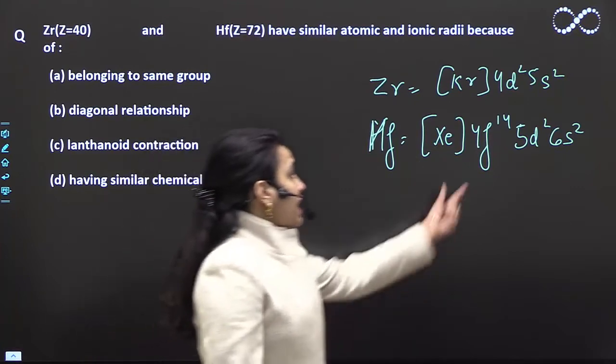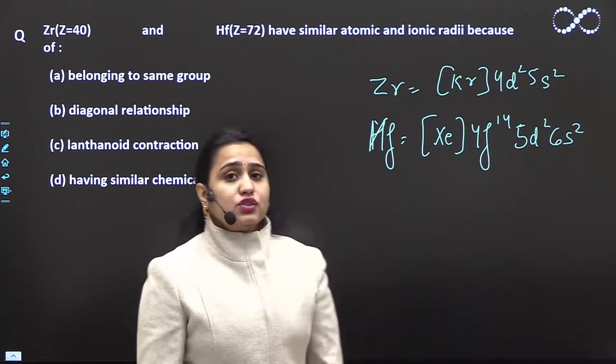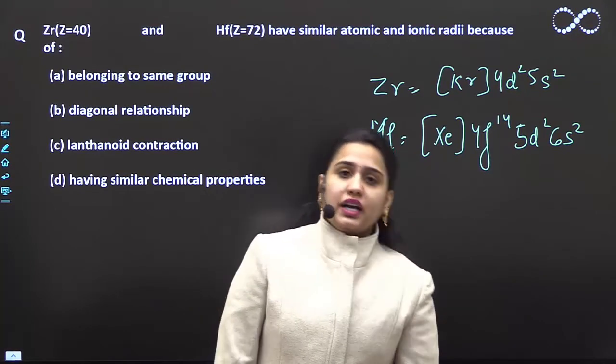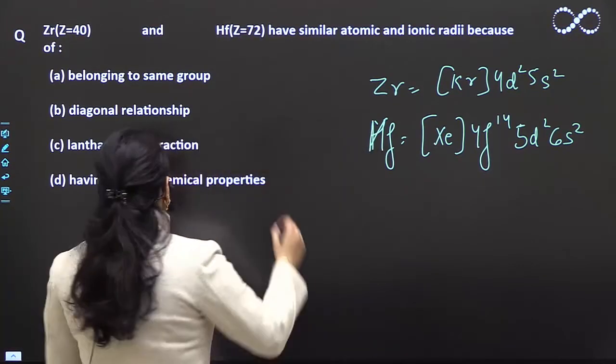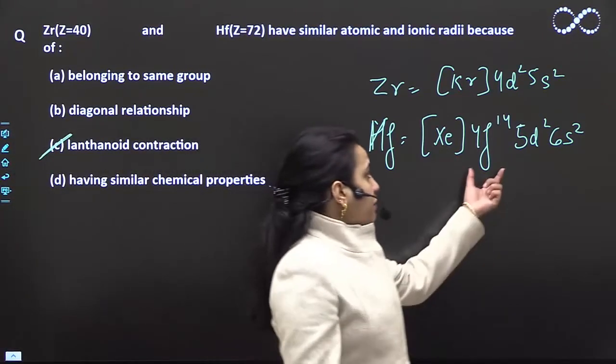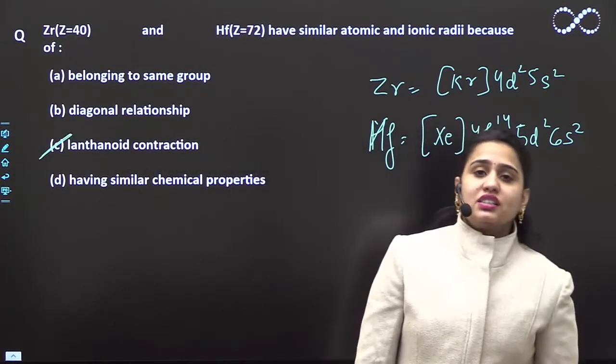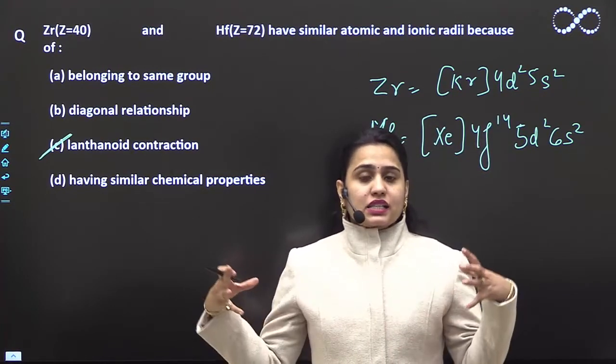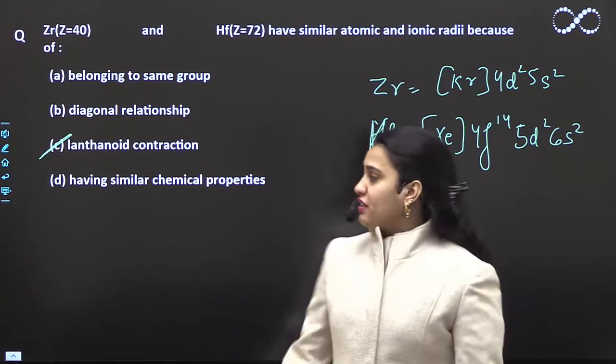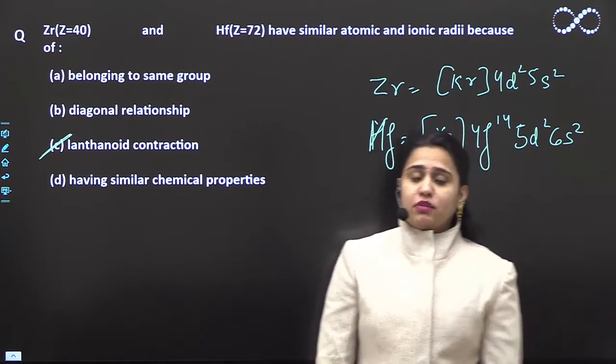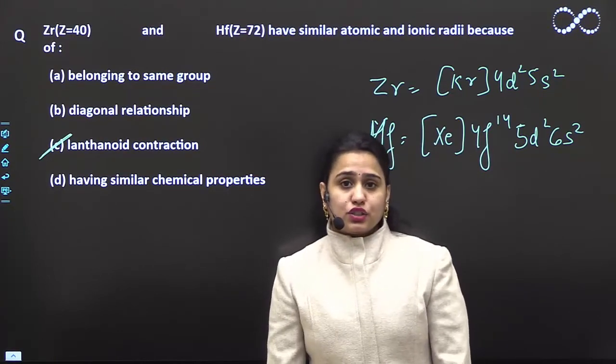It has 4f14 and f shielding effect is very poor compared to d, so due to the lanthanoid contraction the size is contracted. So the effect is lanthanoid contraction. If it was 5f, it would be actinoid contraction.